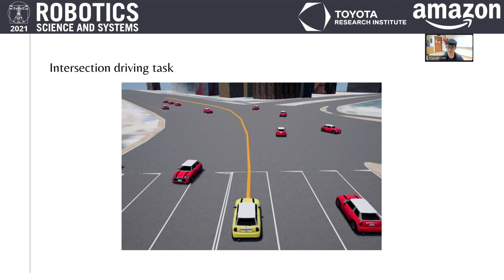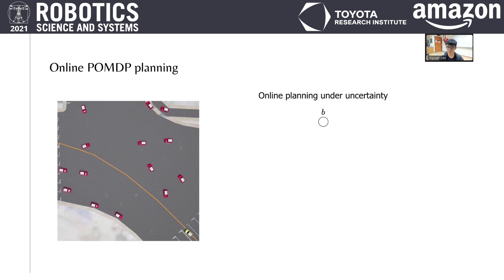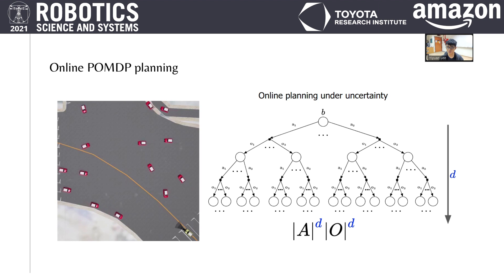Reasoning must be done over a long horizon in order to plan ahead for the safest and smoothest maneuvers. In online POMDP planning, the planner takes the current belief and task context at the current step and simulates all possible actions followed by all possible observations, and it does so over a search tree. The planning complexity is exponential to the search depth, making it impractical for real-time applications with stringent time limits, such as driving a car.